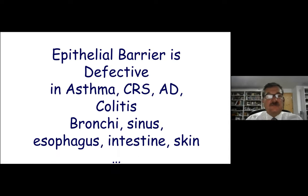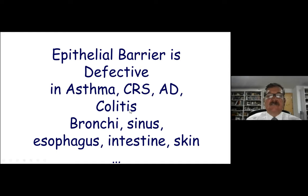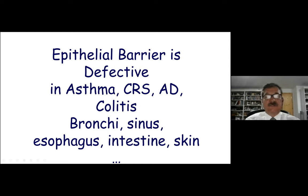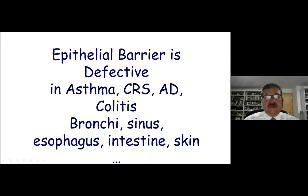In our research — around 60 publications related to epithelial cells — we found that the epithelial barrier is defective in asthma, chronic rhinosinusitis, atopic dermatitis, and polyposis. We did these experiments using biopsies from bronchi, sinus, esophagus, intestine, and skin, and by making air-liquid interface cultures. Currently, we are also making tissue organoids — airway organoids, sinus organoids, skin organoids, and three-dimensional artificial skins — to understand the role of environmental factors.